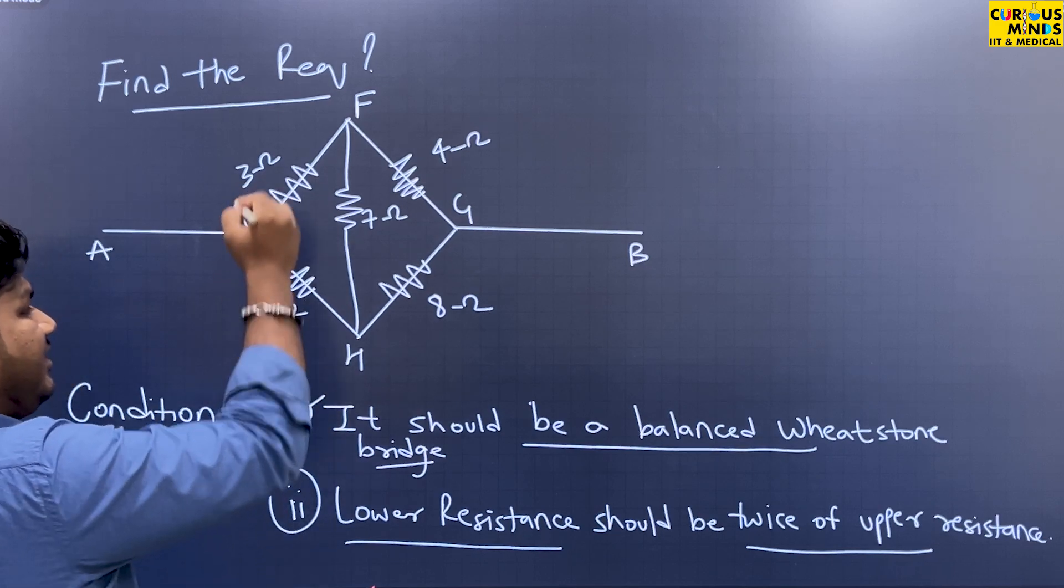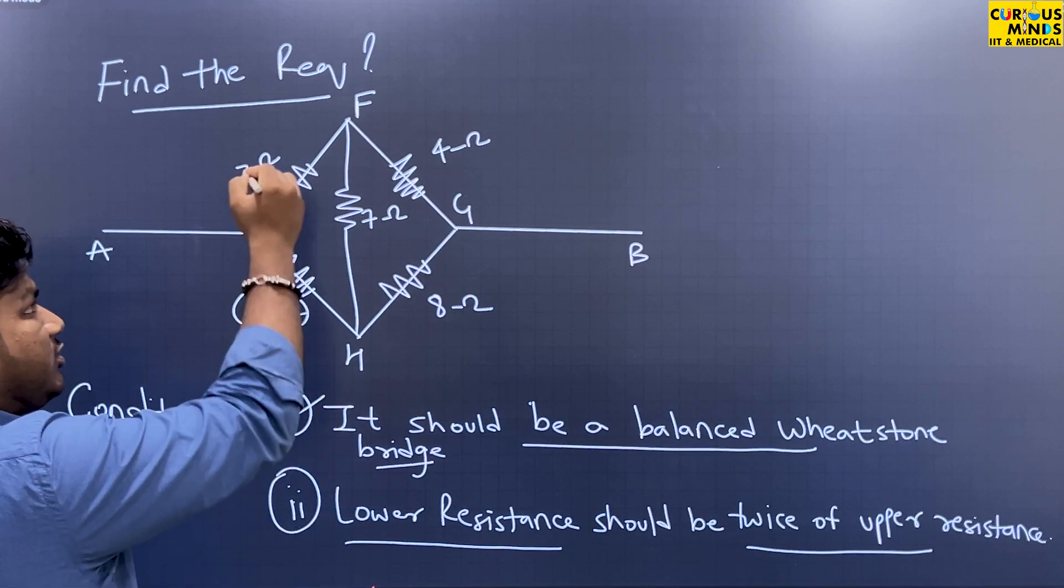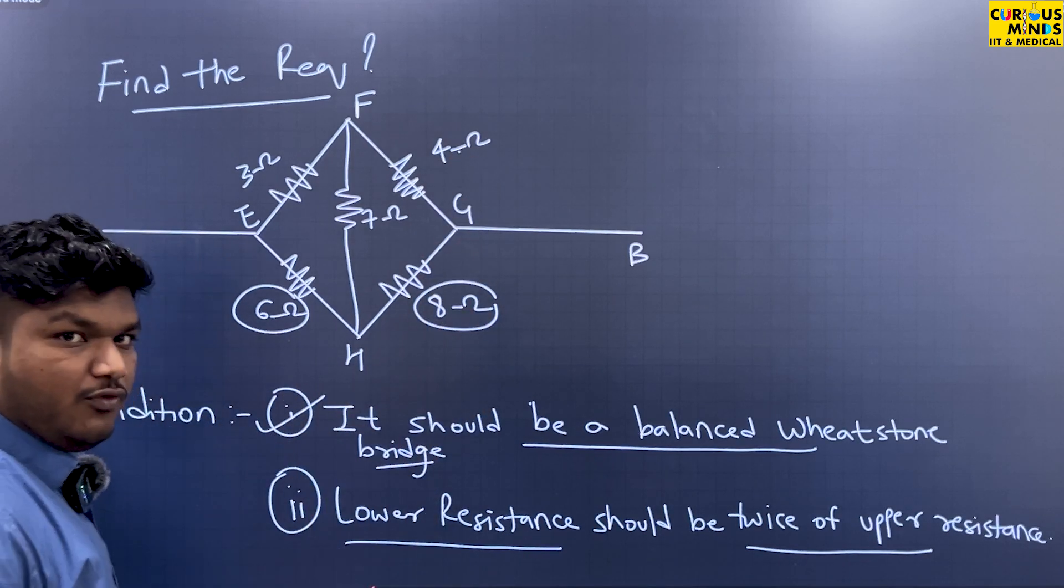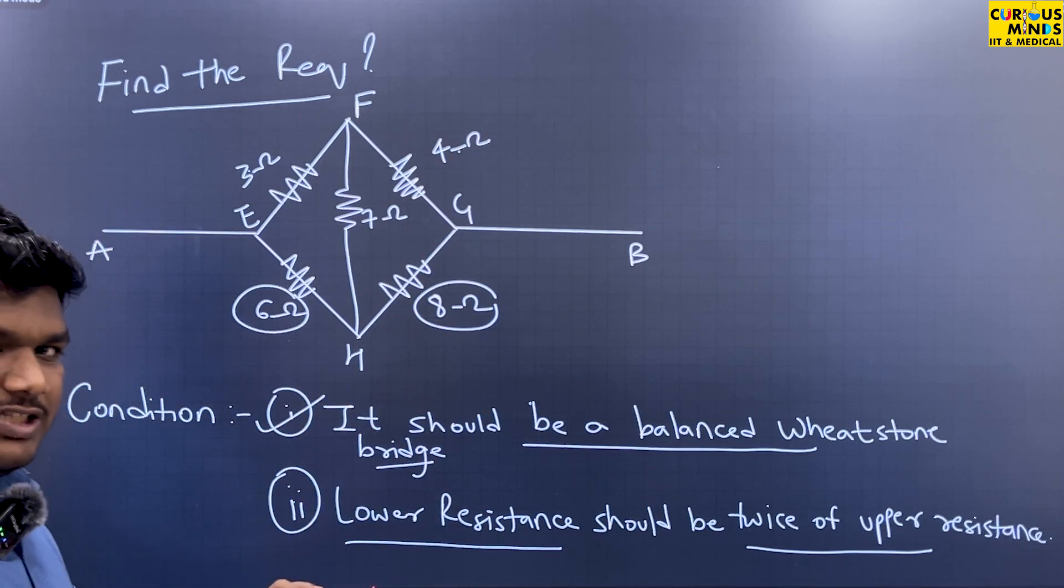Here you can see in the diagram: lower resistance is 6, which is twice of 3; lower resistance is 8, which is twice of 4. So both conditions are satisfied.